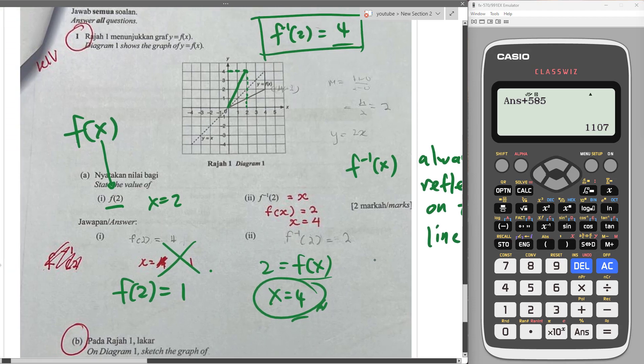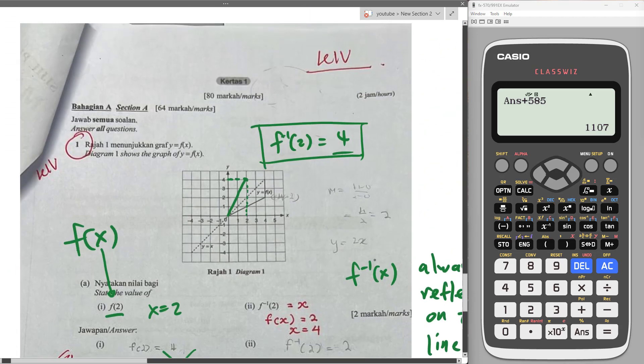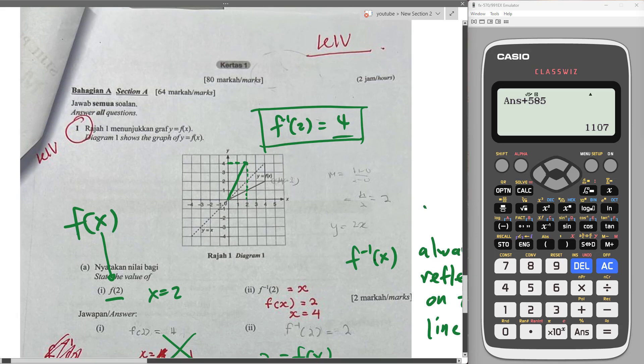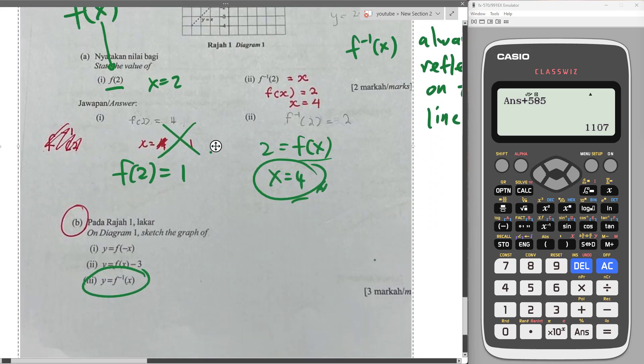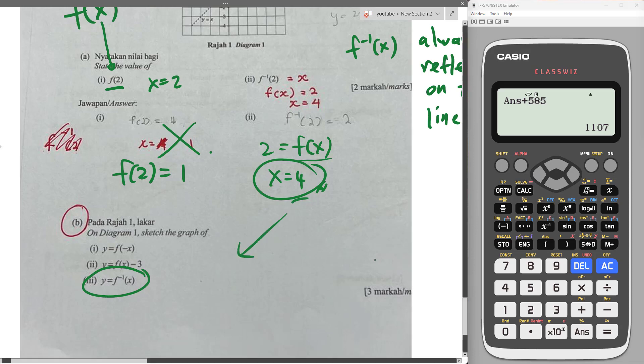Okay, but since later here, they actually ask you to draw the inverse function and I just did. Okay, so just do a reflection on the line y equals to x. So this one is no problem. Okay, then how about, it's going to sketch the graph about f bracket negative x.